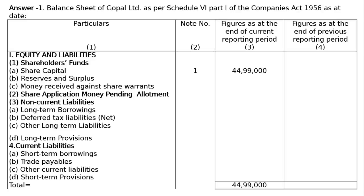4. Current liabilities: A part - short-term borrowings, B part - trade payables, C part - other current liabilities, D part - short-term provisions. Then total.